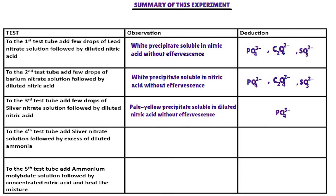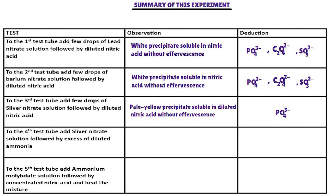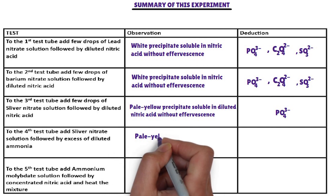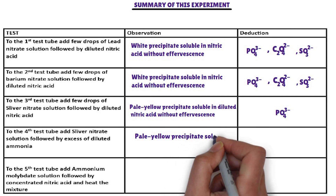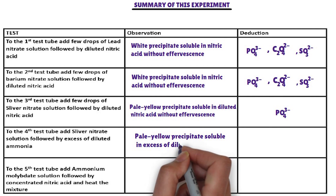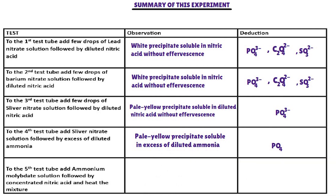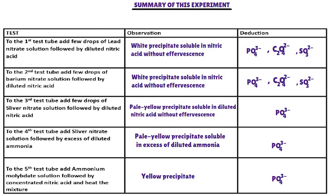To the fourth test tube, silver nitrate solution is added followed by excess of diluted ammonia. The anion that reacts with silver nitrate to form a pale yellow precipitate soluble in excess of diluted ammonia is phosphate ion. Confirmatory test: to the fifth test tube, ammonium molybdate solution is added followed by concentrated nitric acid and heat. The anion that reacts with ammonium molybdate solution on heating to form a yellow precipitate is phosphate ion. Phosphate ion is confirmed. The anion present in the salt is phosphate ion. Subscribe for more videos. Thank you for watching.